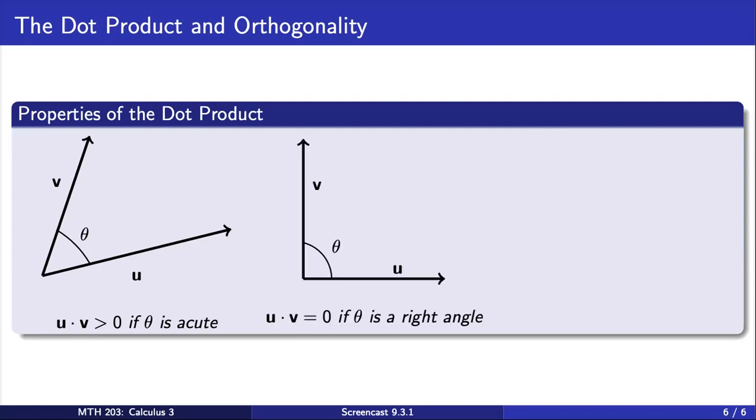If theta is a right angle, as we saw in the previous slide, the dot product is 0. Lastly, if theta is obtuse, then cosine of theta is negative. Therefore, the dot product must also be negative.